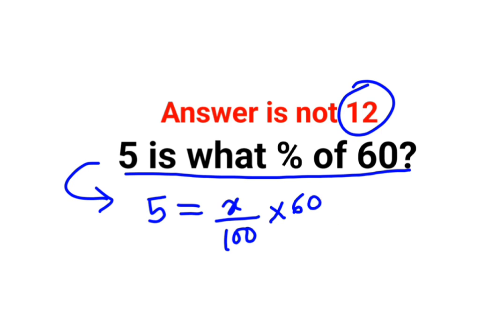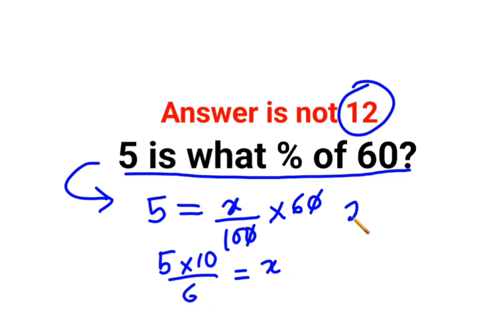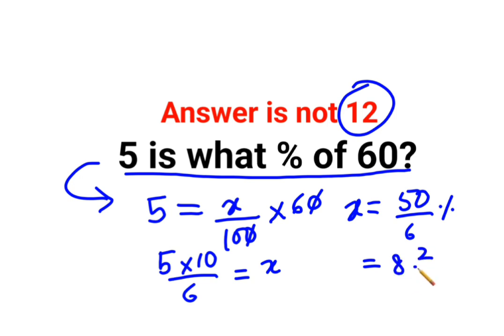So here we have 5 multiplied by 10 divided by 6, equal to x. The value of x is basically 50 upon 6 percent, which can also be written as 8 and 2 by 6 percent.